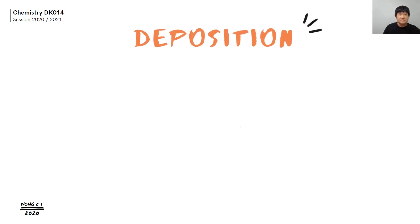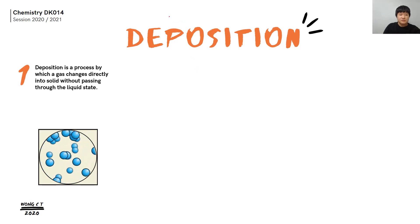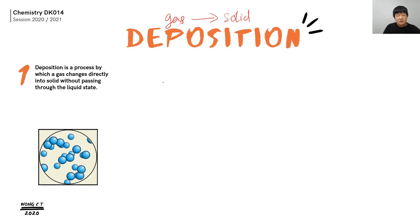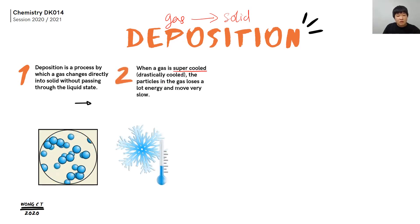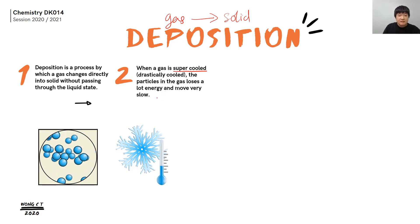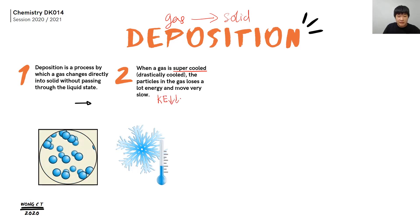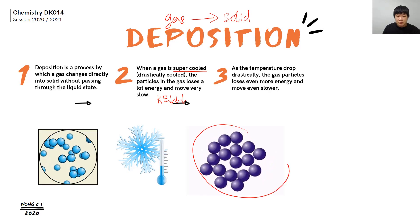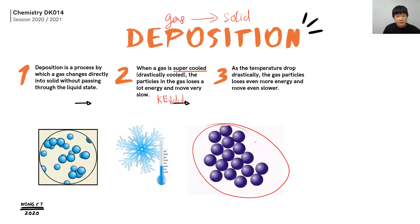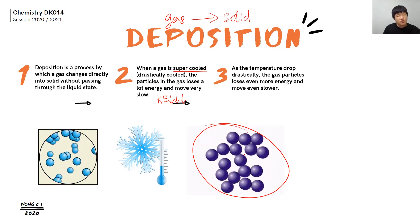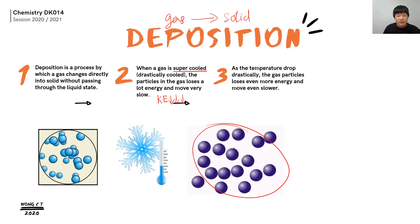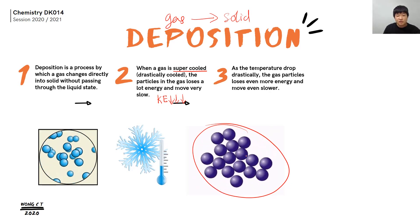The reverse of sublimation is deposition. Deposition is a process where gas changes directly to solid without going through liquid. The condition for this is a super cold condition, meaning the temperature drops drastically. When the temperature drops drastically, the particles lose a lot of energy, so kinetic energy decreases greatly. The gas particles move extremely slowly and come closer together, until the strong inter-particle forces hold them in a fixed position and solid is formed.